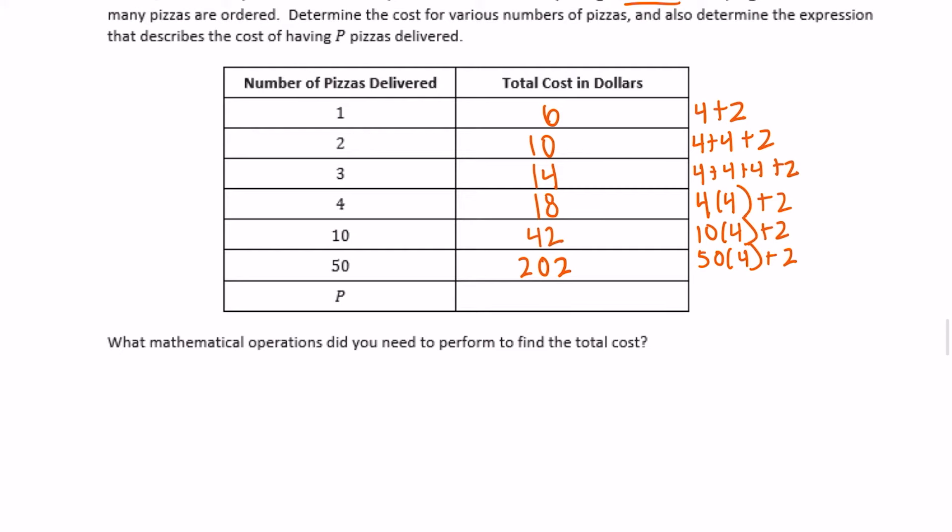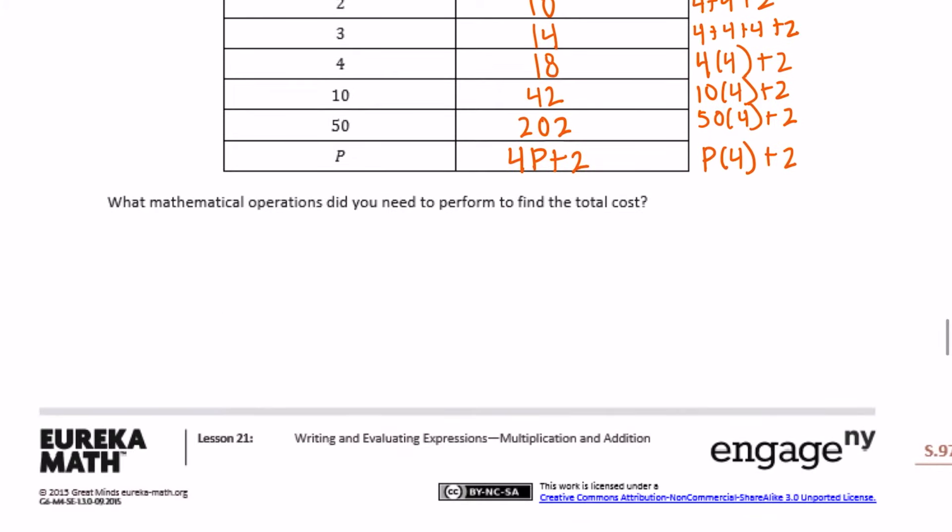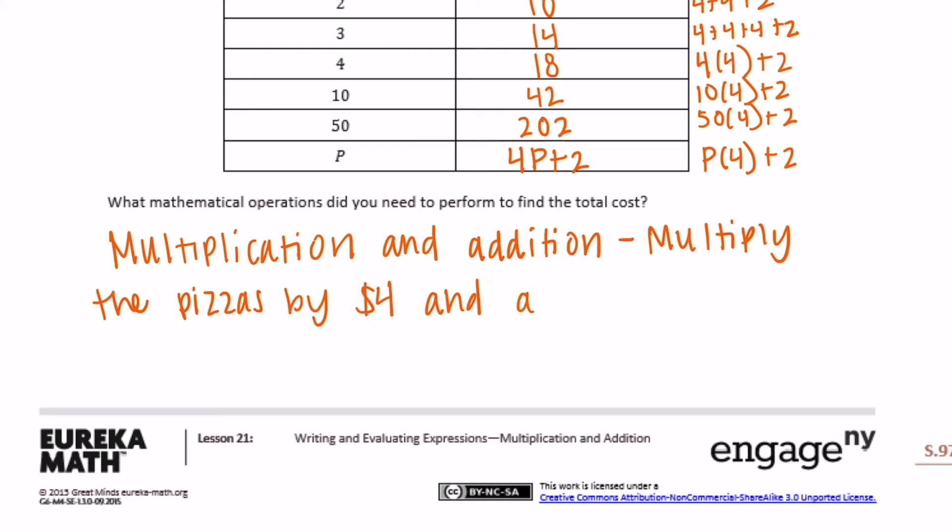And then if we don't know the P, we have P times four plus two, or we could just call it four times however many pizzas plus $2. What mathematical operations do you need to perform to find the total cost? So what we're doing is four times P, we're multiplication, and then we add the $2. So multiplication and addition. Multiply the pizzas by $4 and add $2 for the delivery fee.